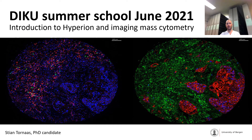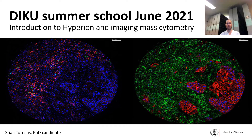Hello everyone and welcome to this part of the summer school where I'm going to talk about Hyperion and imaging mass cytometry. My name is Stian Tornos and I am a PhD candidate here at the University of Bergen. I started my PhD in March last year and one of my focus areas is the use of Hyperion and imaging mass cytometry to do deep tissue profiling on head and neck cancer, trying to understand the heterogeneity of cancer-associated fibroblasts.